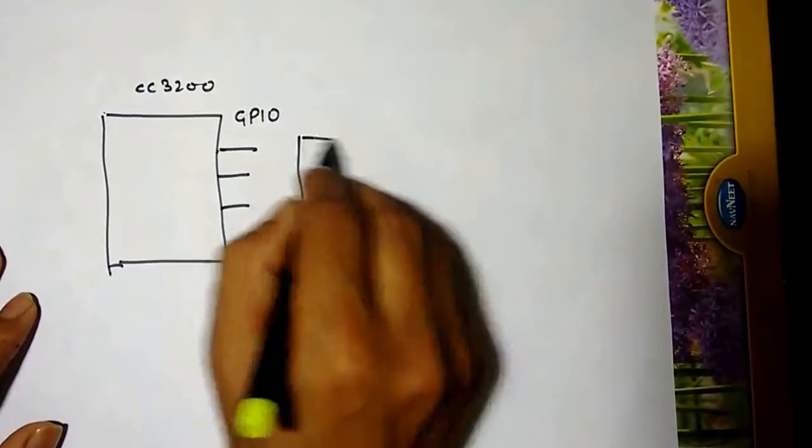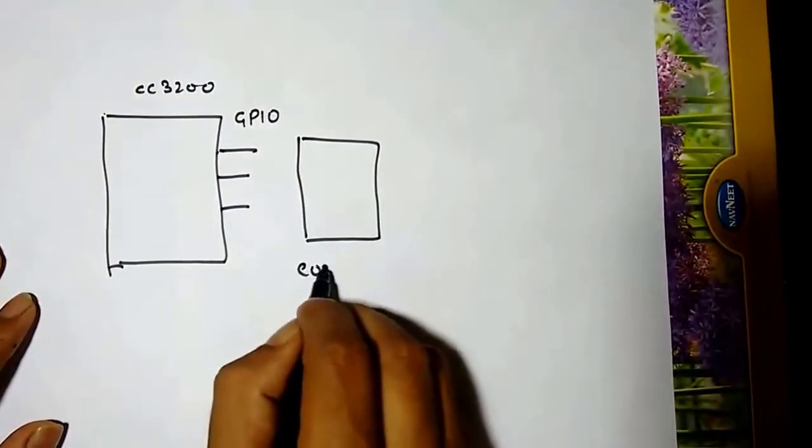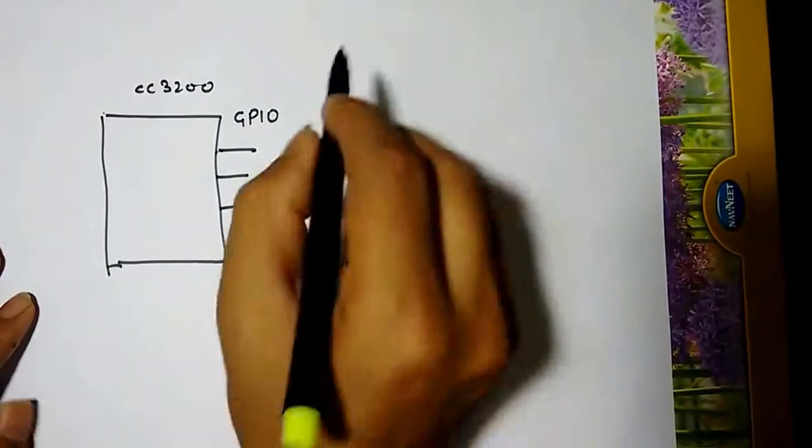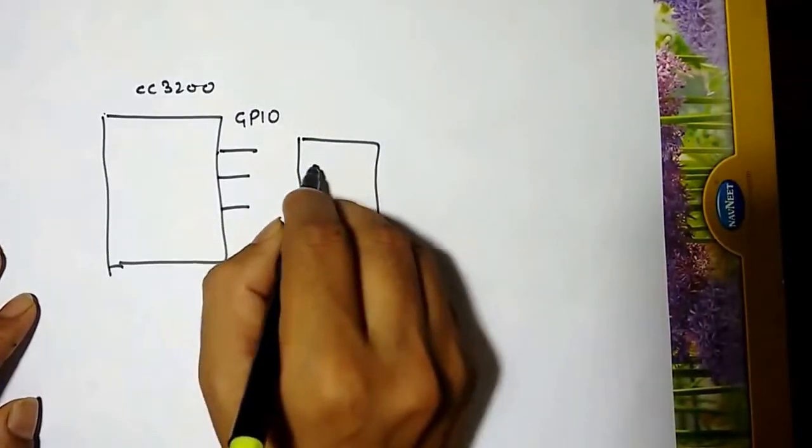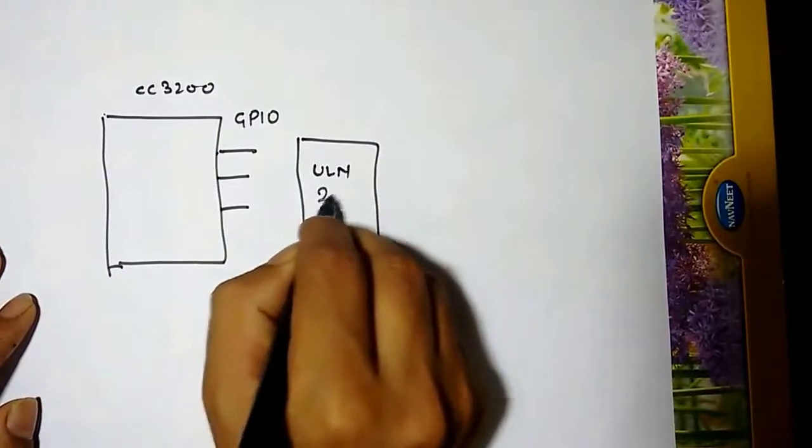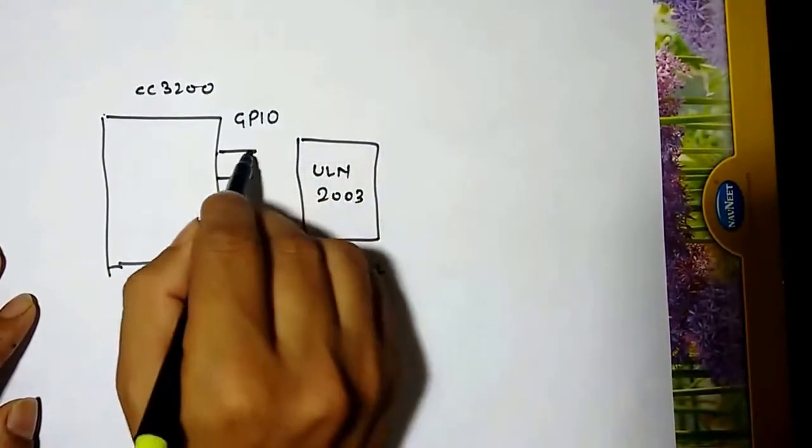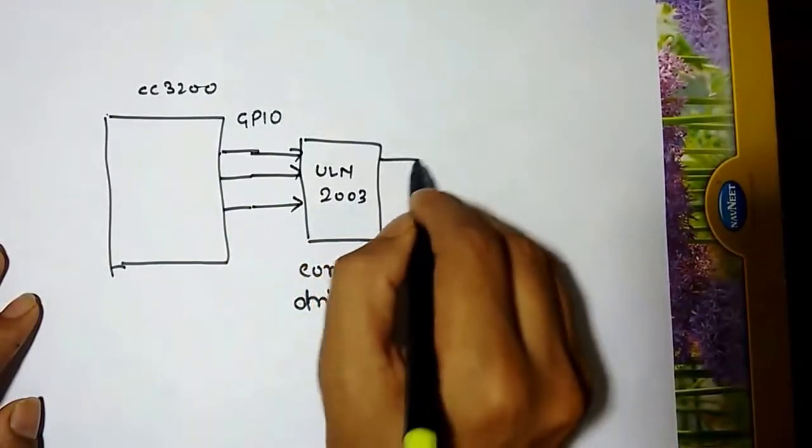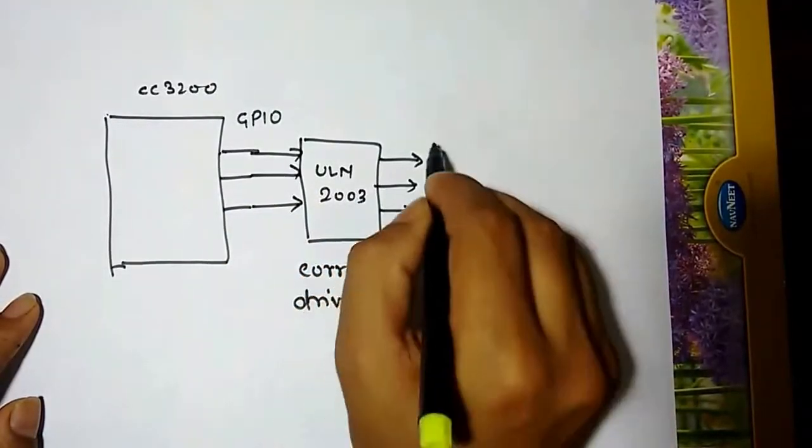So here you need some current amplifier, a current driver. I use the current driver ULN2003. This is the 16-pin current driver you can use. Now you can connect this ULN to the relay.